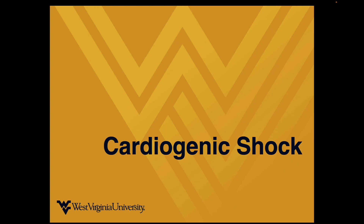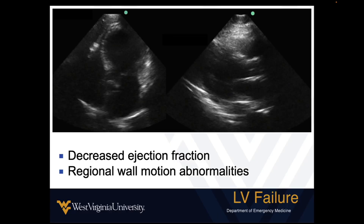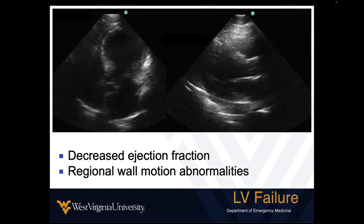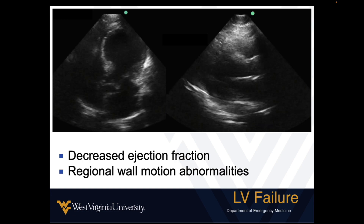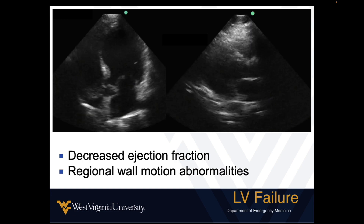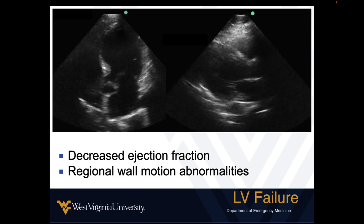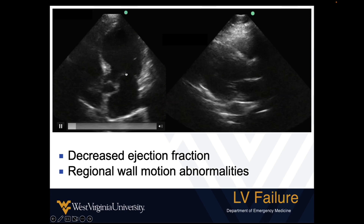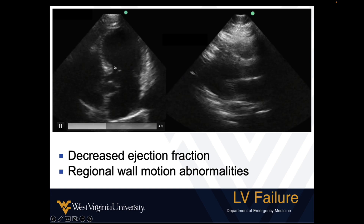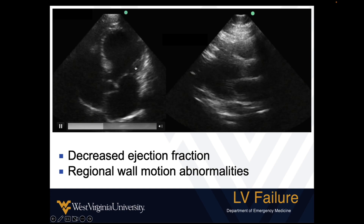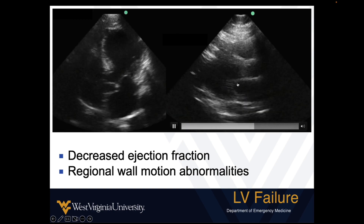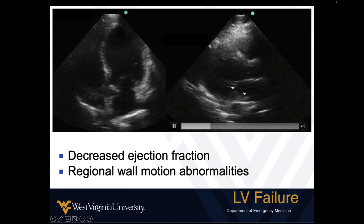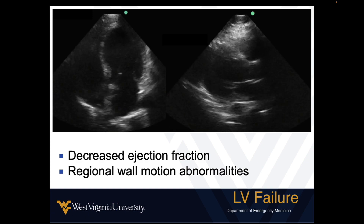How does cardiogenic shock look? Most of the time it looks like this, where we have a decreased left ventricular ejection fraction. Depending on the etiology, if it's an acute MI or some other ischemia, we may see regional wall motion abnormalities. Here we see pretty good systolic thickening of the myocardium at the base of the heart, but the apex is very hypokinetic. Another thing to notice is the mitral valve opens poorly, which is often a sign of poor left ventricular function.